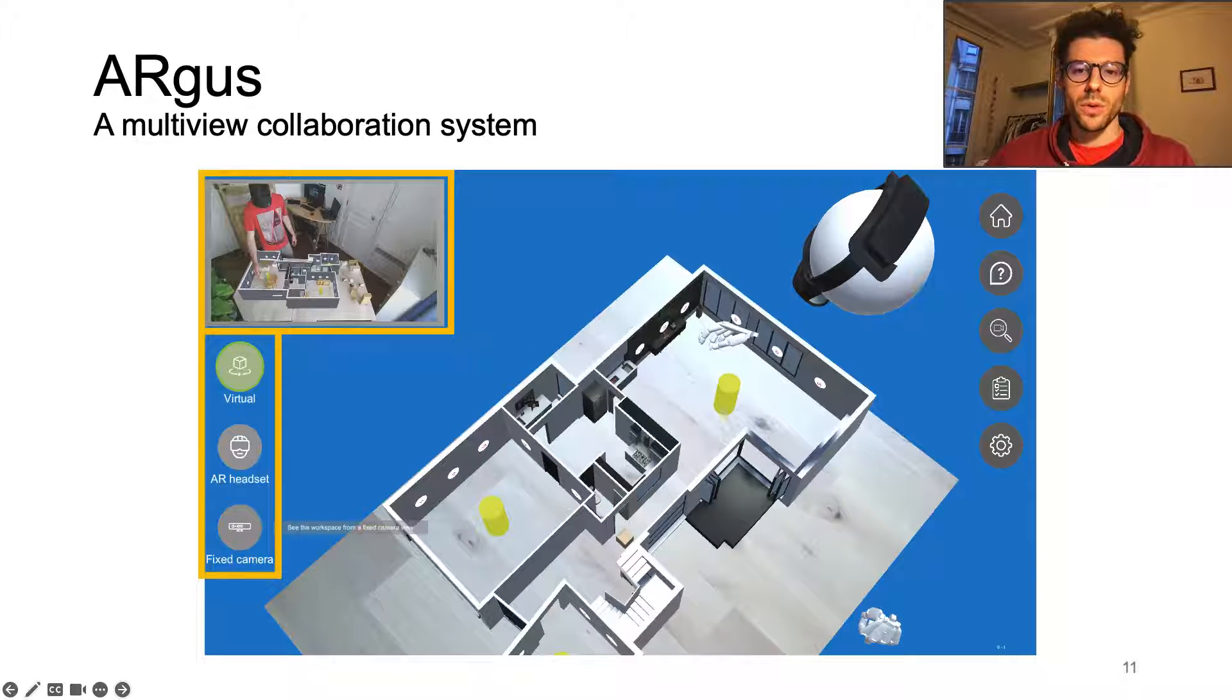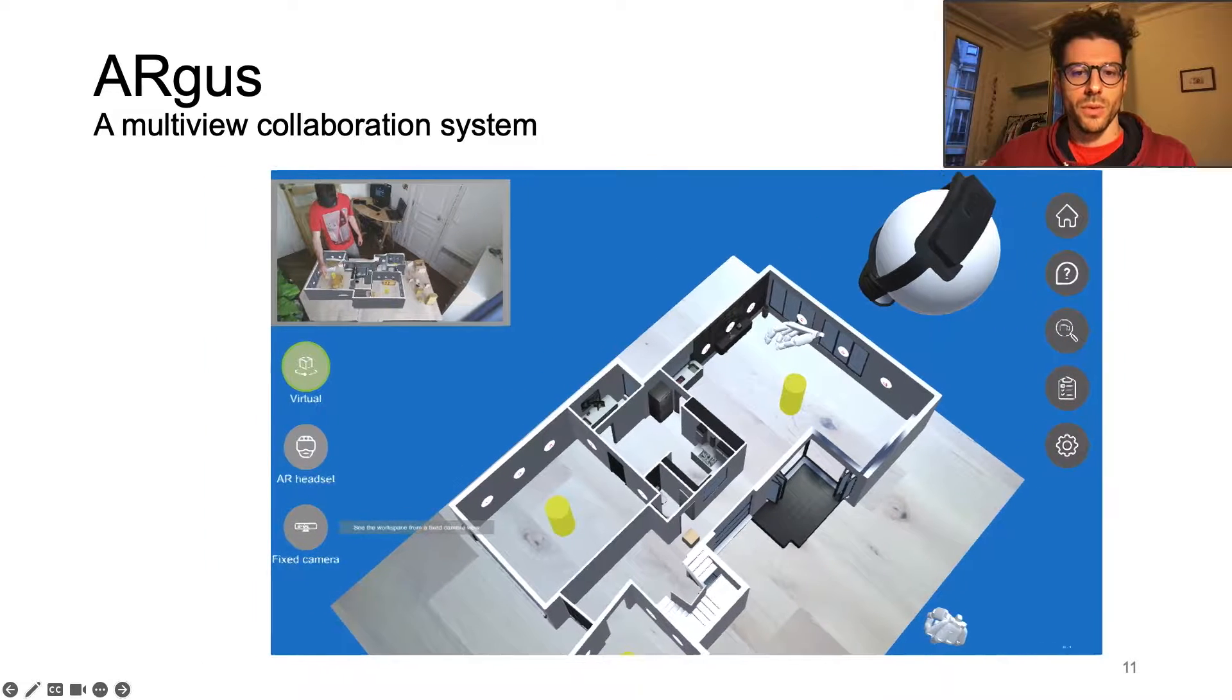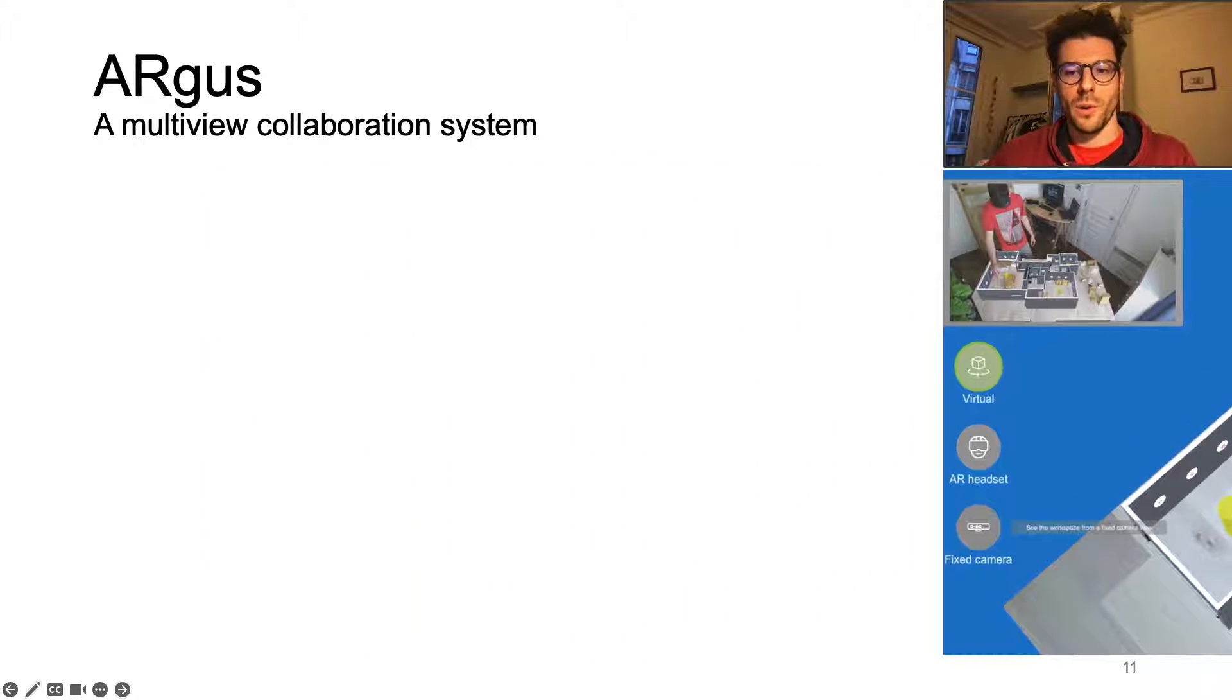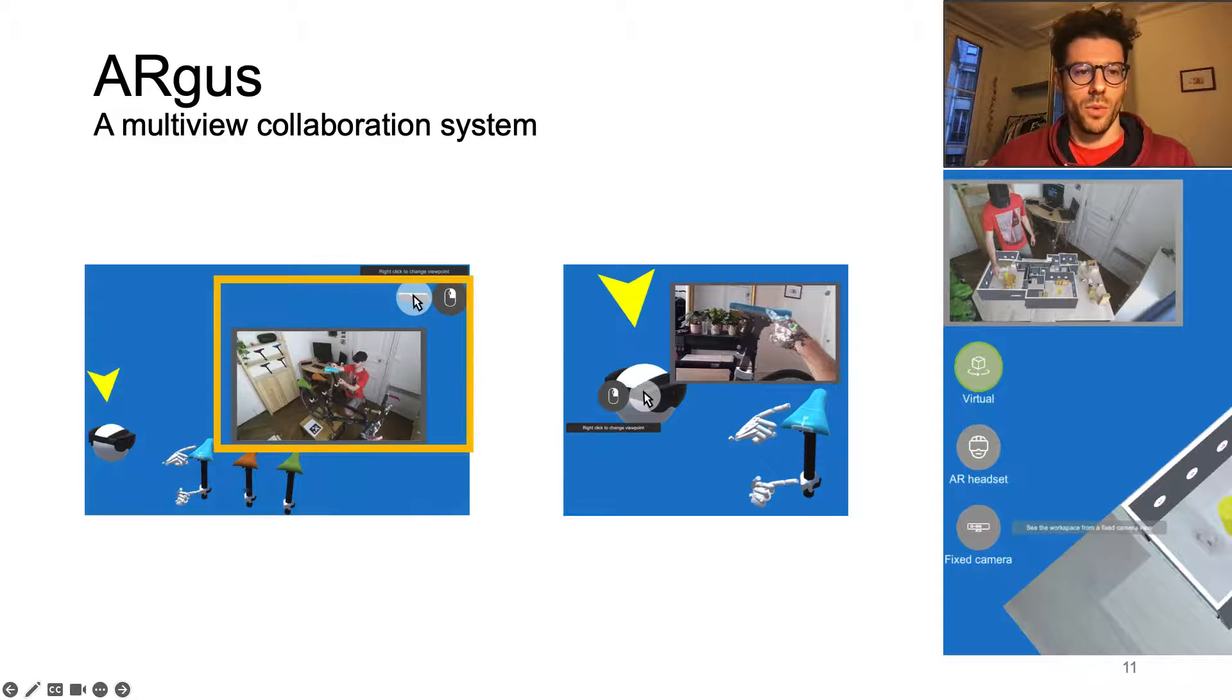At any moment, Argus also offers the possibility to display live previews of all three views by hovering the view buttons. This mechanism aims to prevent the short bursts of switching between views. Previews can also be displayed by hovering the 3D representation of the headset or the external camera.